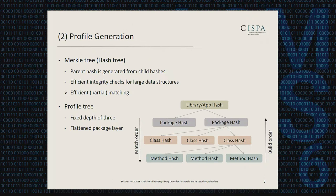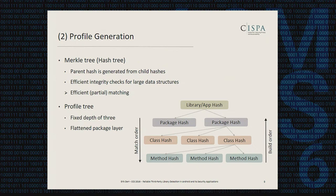For the actual data structure used for our profile, we use a Merkle tree — a hash tree where all parent hashes are generated from their child hashes. Typically they are used for efficient integrity checks on large data structures, but in our case we use it for efficient checks of whether parts of the library are included or not. We fix the depth of the tree to three layers: one dedicated layer for methods, one for classes, and one for packages, flattening the package layer.